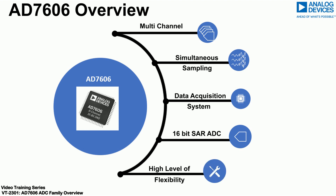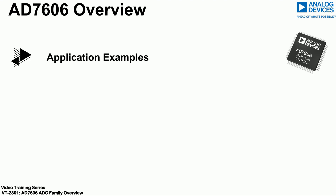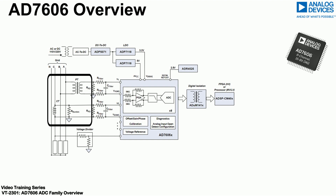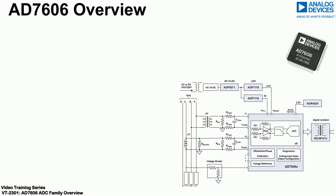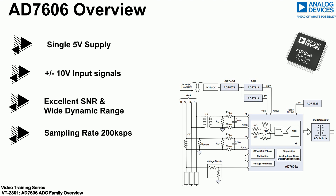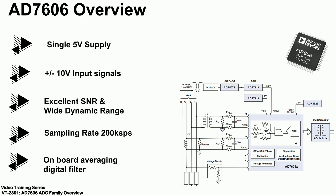The high flexibility of the AD7606 has made it easy to adopt across a range of applications. One example is power line monitoring within substations, where the high input impedance of the ADC enables direct connection to current and voltage transformers. Powered from a single 5V supply, the AD7606 is capable of measuring ±10V signals and has an excellent signal-to-noise ratio, making it ideal for applications needing a wide dynamic range where the measurement of large and small signal amplitudes is important. The AD7606 samples up to 200 kilo samples per second and has an onboard averaging digital filter enabling improved performance in applications where lower throughput is required.